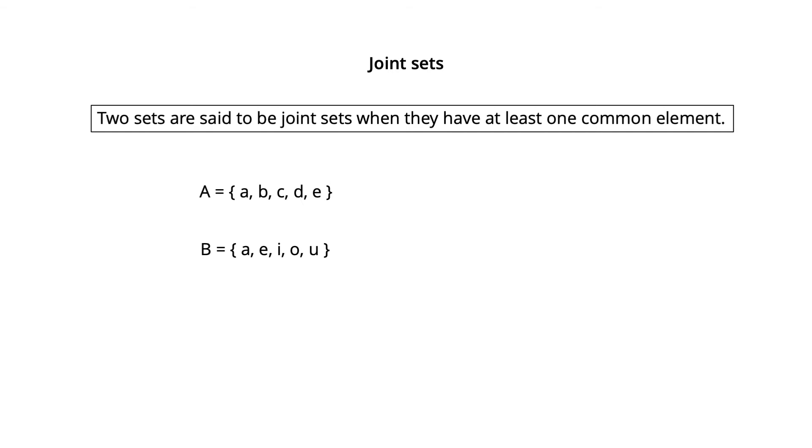Here we observe that both sets contain two elements in common, A and E. So they form a joint set. We show it in a diagram of overlapping the two circles, with A and E in their common area. Then A and B are called joint sets.